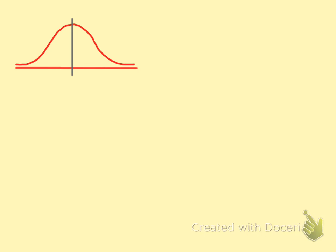We have an example of the normal distribution. We take the people of Holland — they have an average length of 180 and standard deviation of 5. What we try to find out is what is the chance you belong to the length of more than 174 and less than 187.